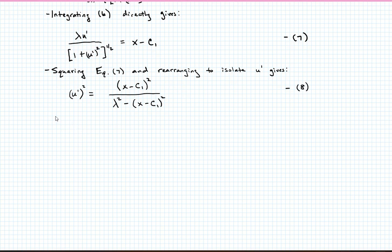Taking the square root of equation 8 gives me an equation for u prime that looks like u prime, which I'll remind you, is equal to du dx. And that's going to be equal to plus or minus, this numerator now just becomes x minus c1, the denominator becomes lambda squared minus x minus c1 squared. But now we have to take that to the square root, the 1 half power. Let's call that equation 9.